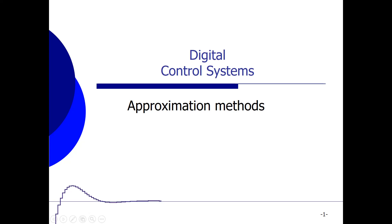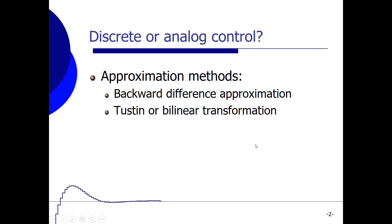Hi everyone. In this video I'm going to explain how we can switch easily from the continuous S domain to the time-discrete Z domain by using approximation methods. The approximation methods we're going to discuss are the backwards difference approximation and the Tustin or bilinear transformation. Both methods guarantee that a stable controller in the S domain yields a stable controller in the Z domain.